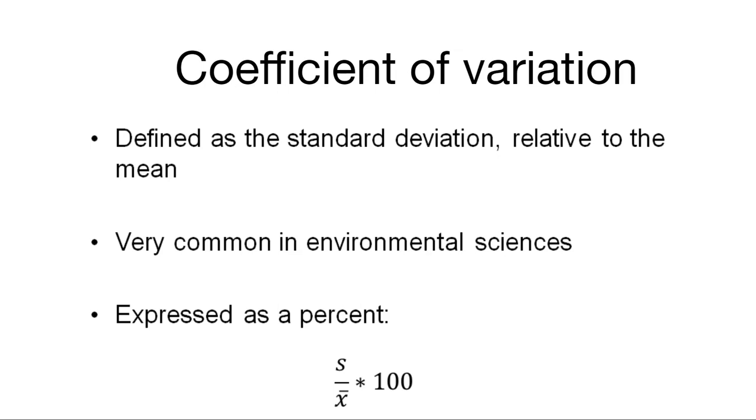If we combine both the standard deviation and the mean, we have what we call the coefficient of variation. And we define this as the standard deviation relative to the mean. It's very common in the kind of work that we do in natural resources and environmental sciences and agriculture. And we express it as a percent. So we take the standard deviation divided by the mean and multiply it by 100.